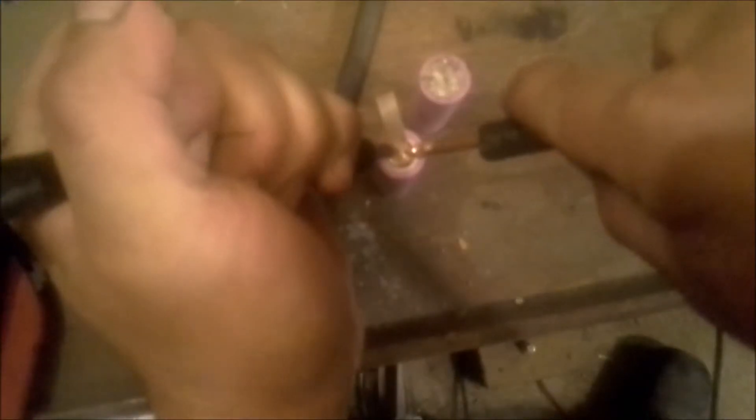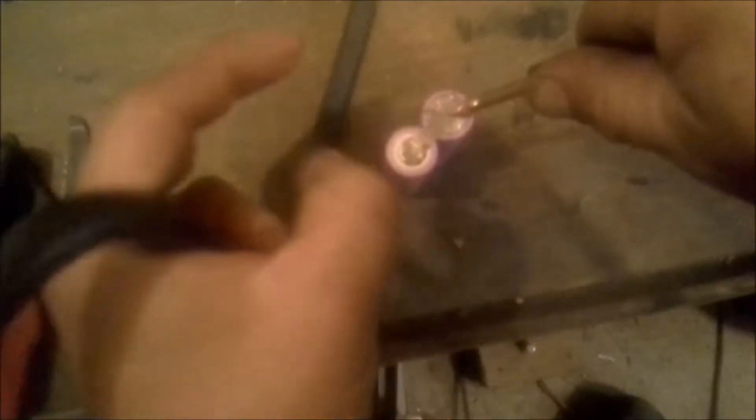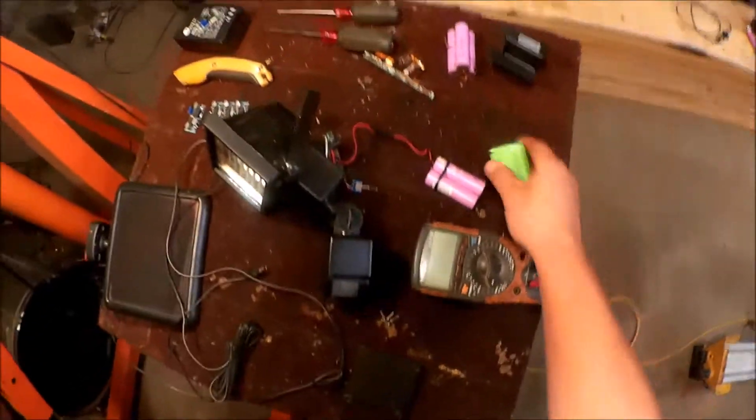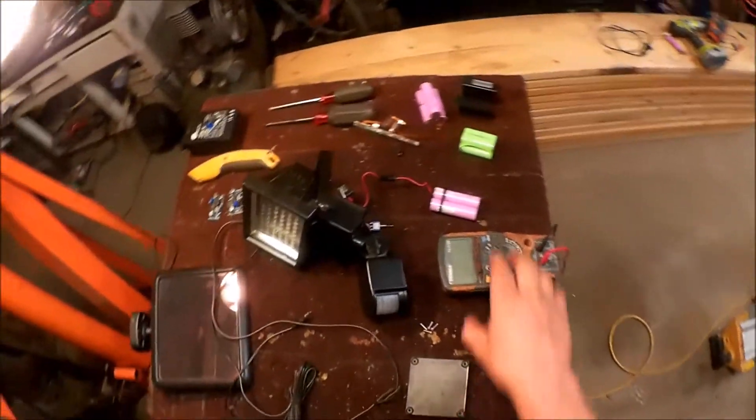And I went over to the spot welder and assembled them. There you can see the welds. So I attached the leads from the old battery pack there and plugged it into the light and it worked quite well again.